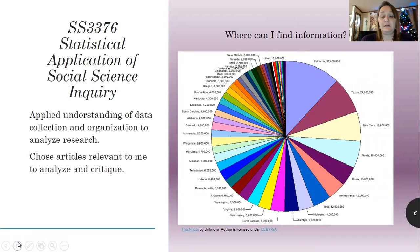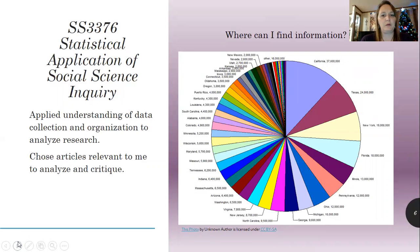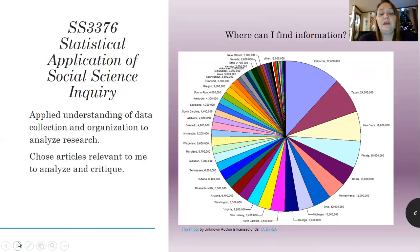Social Science 3376 was statistical application of social science inquiry. It was all about what you do with the numbers you find, who you found doing what, and how you put your information together to present it to the general populace. I found this cool little chart that says where can I find information. This apparently is the population of every state in the United States, and this is where we get our sample, and this is who we need to be talking to to find out things about our society and what we need to do to make changes.